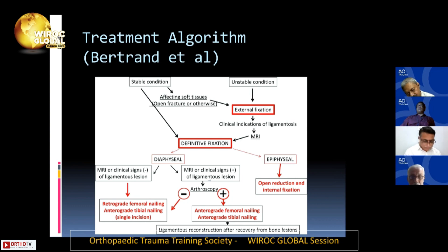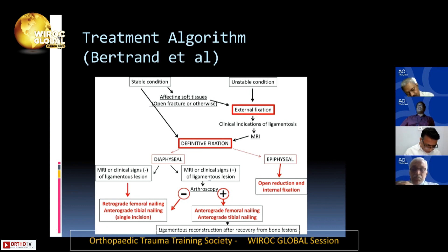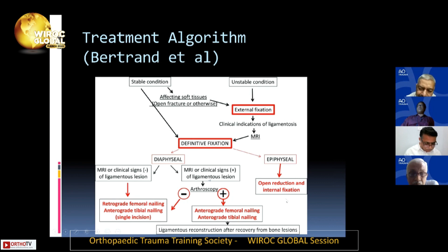If there is an intra-articular fracture, you obviously have to perform open reduction and internal fixation. The main consideration in this case is articular reconstruction, so anatomical reduction and internal fixation are required.